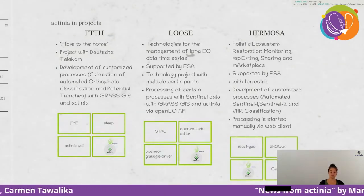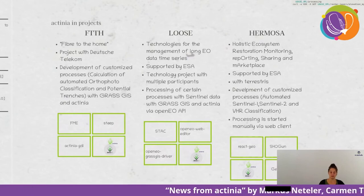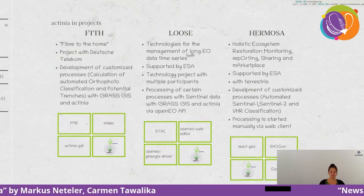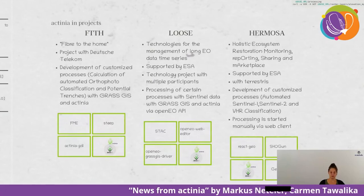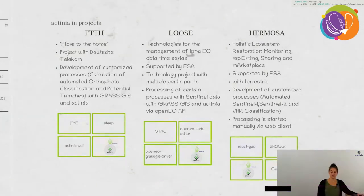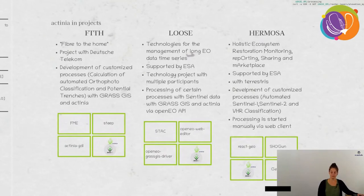Another example is LUSE, a technology project. It involves processing with GRASS GIS and Actinia and has a STAC catalog of data. Processes can be started in multiple ways; one example is via the OpenEO web editor, which starts a job through the OpenEO GRASS GIS driver, translating it into a process chain for Actinia, which then does the processing.